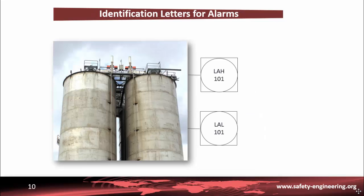In order to warn operators of potential problems, alarms are placed in the control room. These could be high-measure alarms or low-measure alarms. The tagging identification letters for alarms are straightforward. The first letter is the measured variable — here, temperature. The letter A placed in the second position indicates that the symbol is associated with an alarm. So this alarm is applied to the temperature.